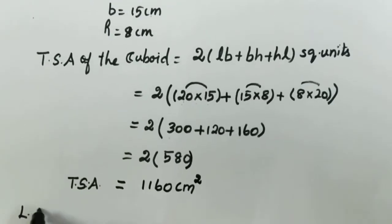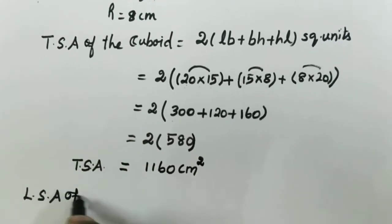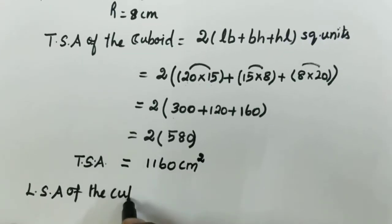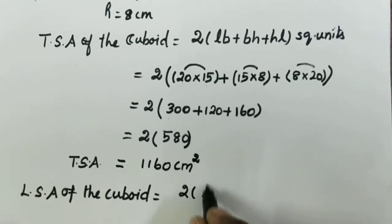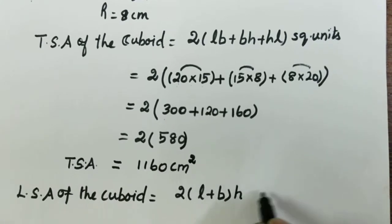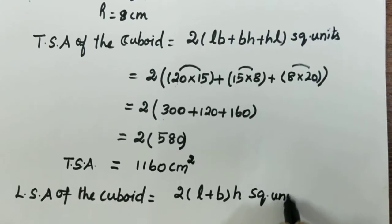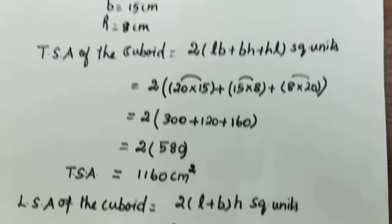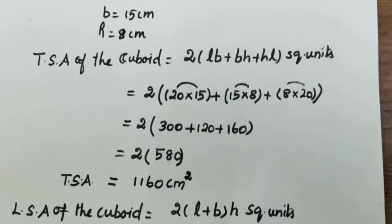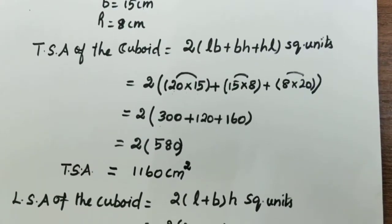Next, calculate lateral surface area of the cuboid. Formula: 2 into L plus B into h square units. We know the values. So 2 into length 20 plus breadth 15, height 8.